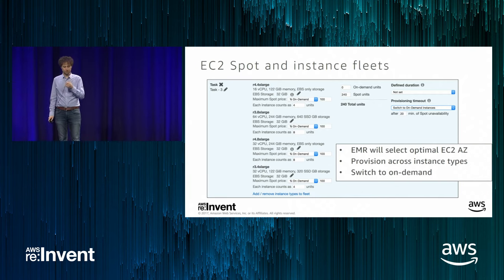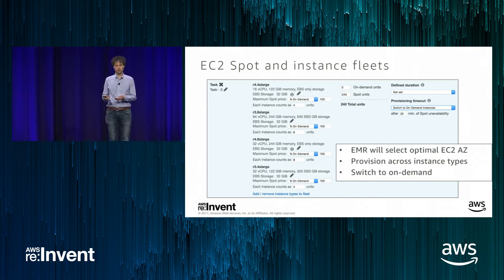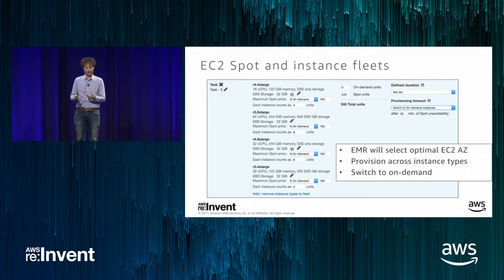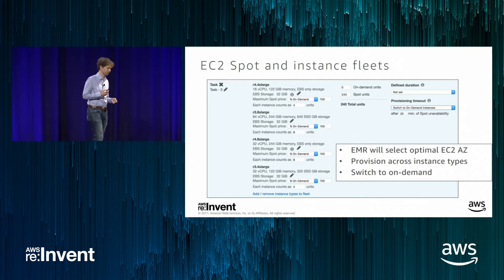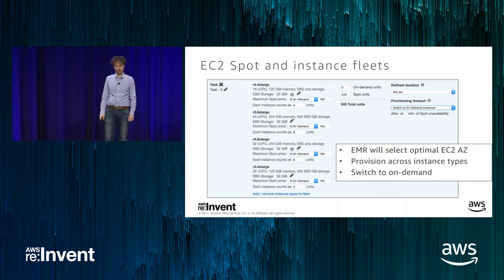Another cost-saving strategy is EC2 Spot instances, which can save up to 80% off on-demand pricing. The caveat is that spot instances can be reclaimed. For SLA-driven workloads, run task nodes on spot — they don't hold HDFS data — while keeping core nodes on-demand. If a failure occurs, having logic to kill the cluster and recreate it on-demand is doable. The savings from the many successful runs outweigh the occasional more-expensive retry.